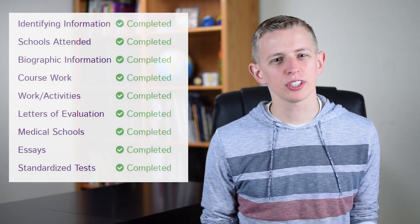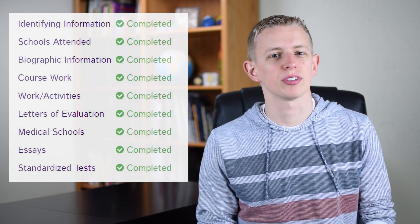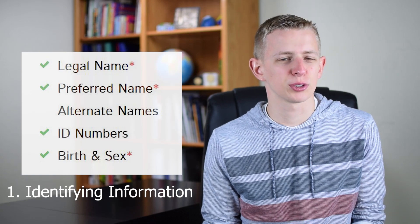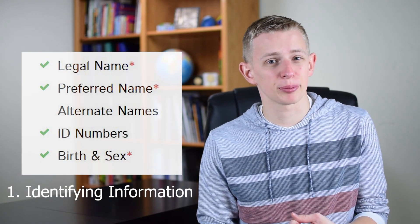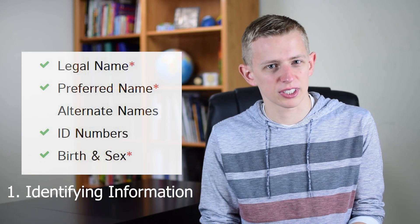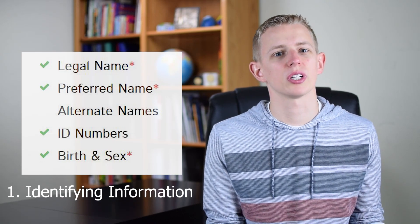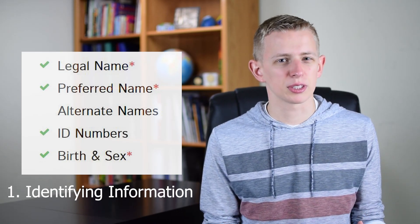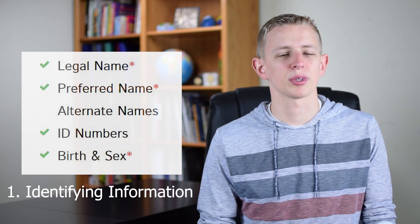Within the primary application, there are officially nine sections that you'll have to fill out. In the first section, which is identifying information, they're going to ask you for five different things: your legal name, your preferred name, any alternate names that might appear on your identification, your student ID numbers at any college you've ever attended, and your birth and sex information. All that is pretty simple and doesn't really affect your application in any way.